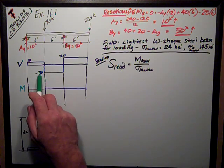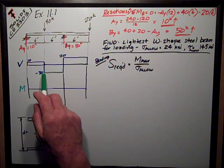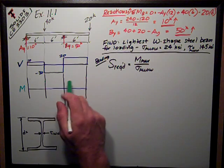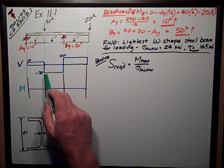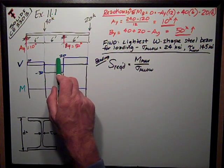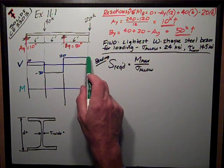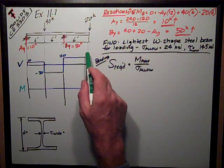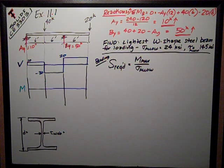so 10 minus 40 is negative 30. Still stays constant over to the reaction at B, support, which is 50, so it jumps up from negative 30 plus 50, puts me at 20, and I stay there until I get to the end of the beam, that overhang. The 20 kip reaction takes me back down to zero.